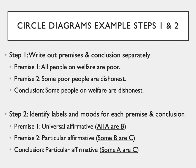In step two, we identify the labels and moods for each premise and conclusion. Premise one is the universal affirmative — all A are B — where A refers to people on welfare and B is poor. Premise two is the particular affirmative: some poor people are dishonest, some B are C, where C is dishonest. The conclusion is also particular affirmative: some A are C — A for welfare, C for dishonest.